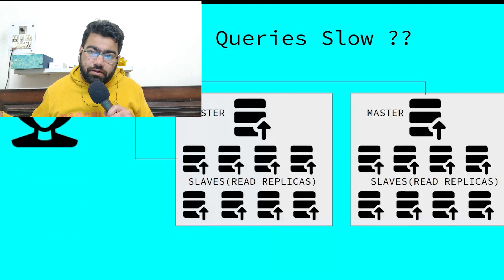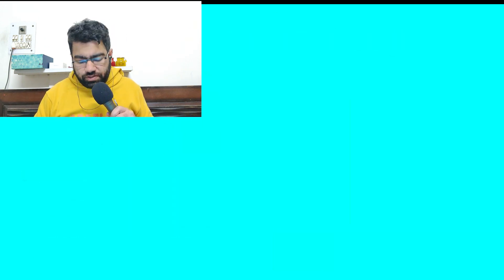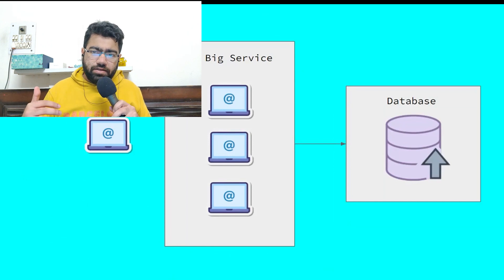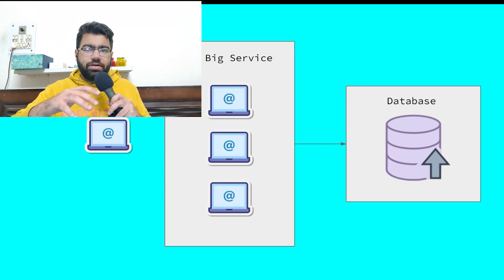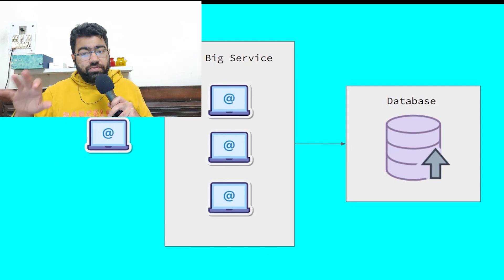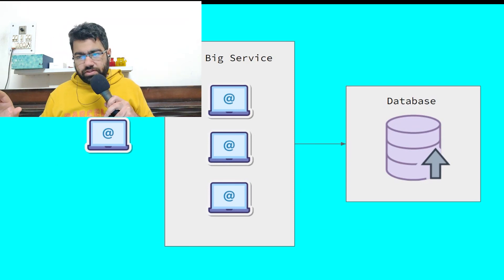The client is not directly calling the database; it calls through a back-end service, which is in turn called by a front-end server. Now in most services, the write-to-read ratio is generally 10:90 or even 1:99. You don't need many writes, but you are reading the same data again and again. For example, on LinkedIn or Facebook, if you follow the same people, many users see the same posts.